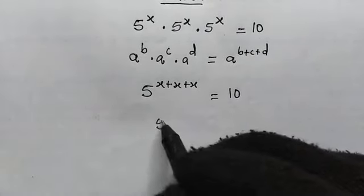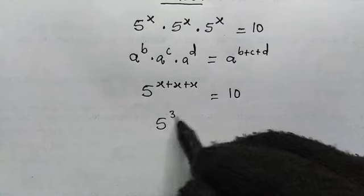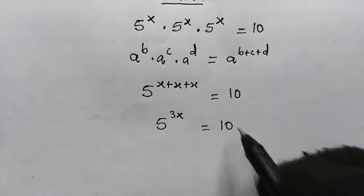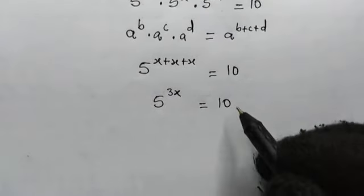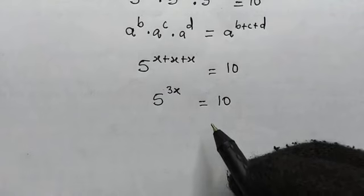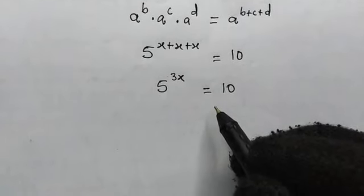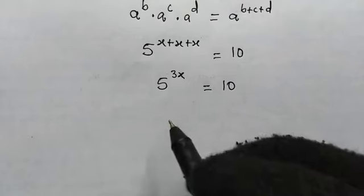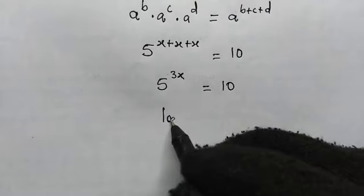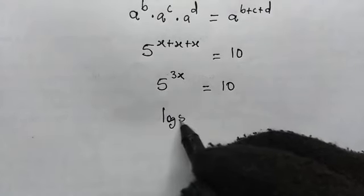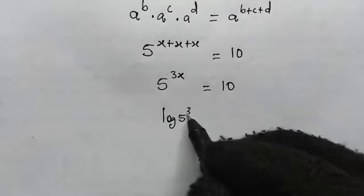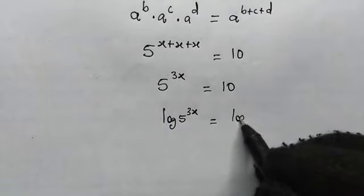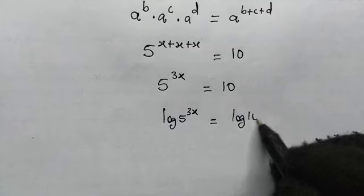From here, we'll have 5 to the power of 3x, which is equal to 10. Now we're going to apply logarithm on both sides of this equation. So we have log of 5 to the power of 3x equals log of 10.